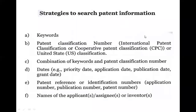What are the strategies to search patent information? If you want to search for your invention, you can use your keywords. These are the strategies: number one is keywords; second one is patent classification number; third is combination of keywords and patent classification number. There is also a date range of existing patent options.